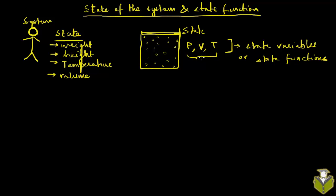That minimum set of properties can be independently varied, and the other state variables can then be derived from these minimum number of state functions. Luckily, we don't have to define the state of the surroundings, because surroundings is everything in the universe except the system, and there is no way to uniquely describe the state of the universe. Also, the values of these state variables are going to depend only on the state of the system at that point in time — it doesn't matter how that state was reached. The change in a state function depends only on the difference between the initial and final states, not the path taken.